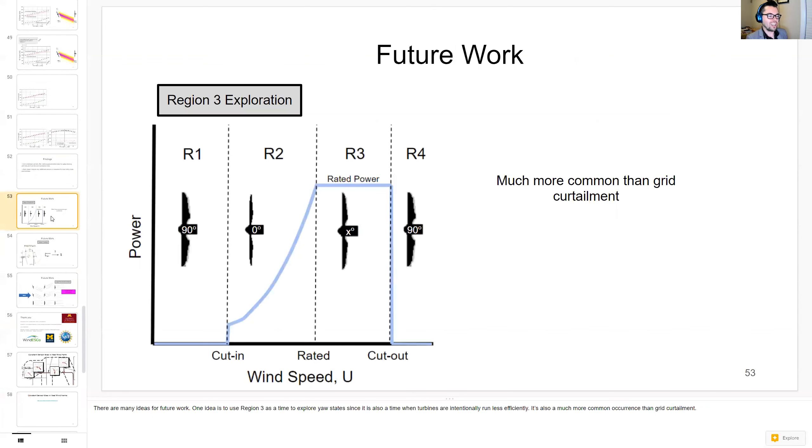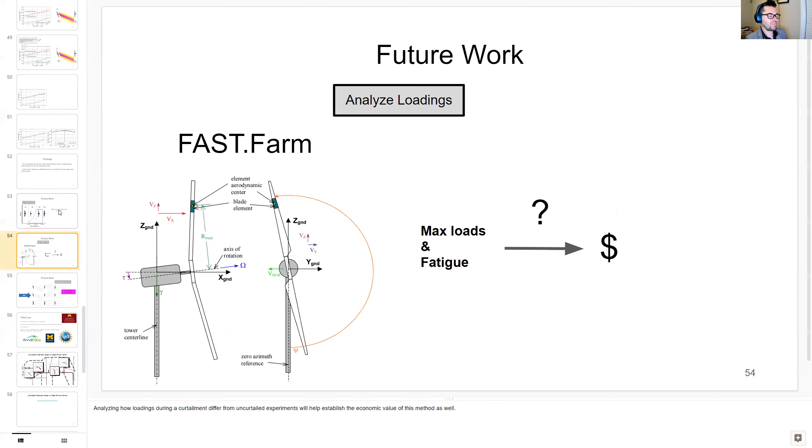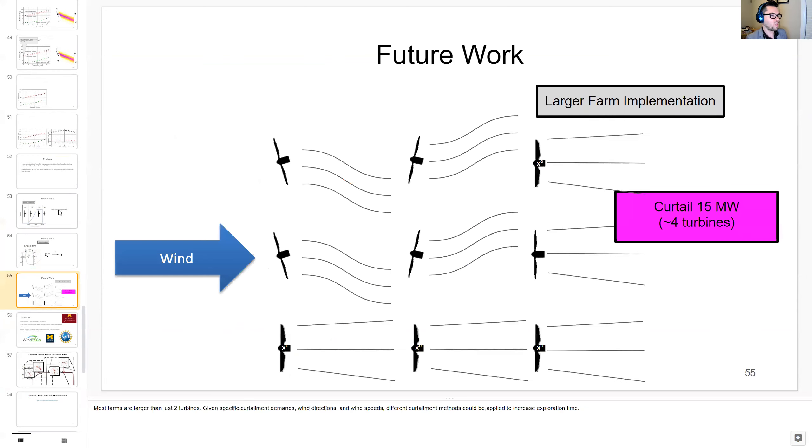Some future work if I have time here is looking at region 3 exploration since region 3 is a time where you can explore the yaw states and the turbines are already intentionally running less efficiently. Analyzing loads will be important to establish the economic value of this method. And most farms are larger than just two turbines. So given specific curtailment demands, wind speeds, and wind directions, different curtailment methods could be applied to increase exploration time.